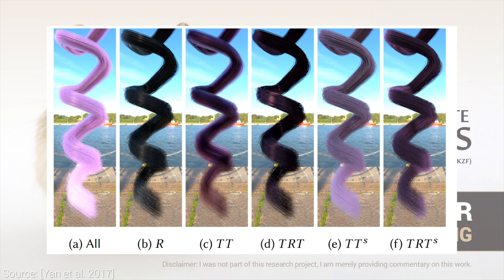The paper also contains a set of decompositions for different light paths. Here you can see a fully rendered image on the left, and different combinations of light reflection and transmission events. For instance, R stands for one light reflection, TT for two transmission events, and so on. The S in the superscript denotes light scattering events. Adding up all the possible combinations of these T's and R's, we get the photorealistic image on the left.